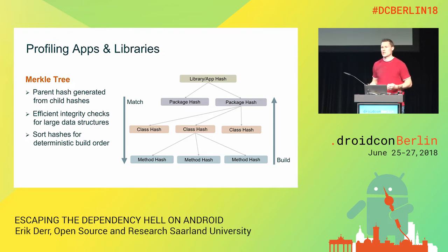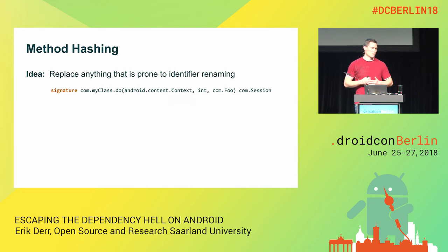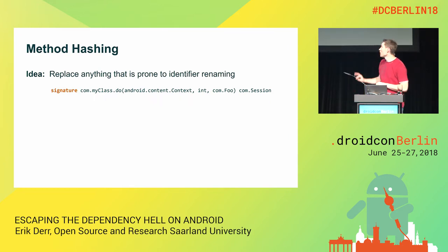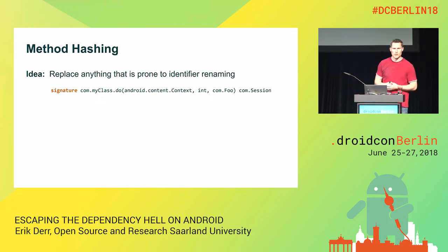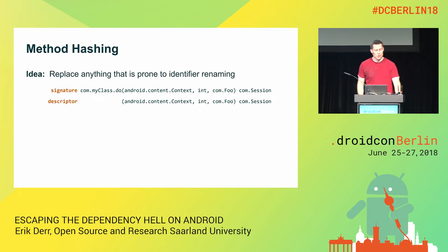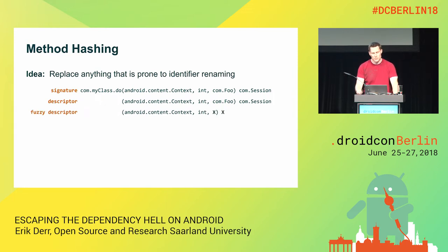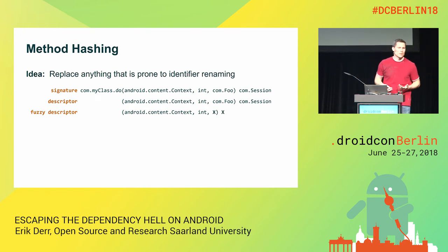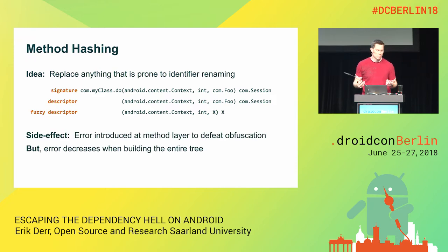We sort the hashes before building the parent hash to retrieve a deterministic build order. The only question left is how to generate the method hashes without looking at the instructions. The only thing available is the method signature: package name, class name, method name, argument types, and return type. If we simply hashed the signature, we'd be prone to identifier renaming, since any custom type can be renamed. So we apply a two-step approach: first, strip anything before the brackets, leaving only the argument type list and return type; then, replace any custom (non-Android framework) types with a common placeholder 'X'. What we get is a so-called fuzzy descriptor — a pattern or template.